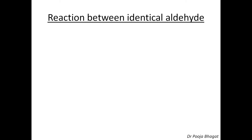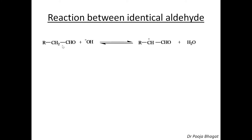Now let us discuss the reaction between identical aldehydes. In part 1, I have already discussed the reaction between acetaldehyde in detail. Here I am taking a general aldehyde molecule and discussing the mechanism. This is the general aldehyde RCH₂CHO. For R, you can substitute various values. When R is H, this is acetaldehyde or ethanol. When R is methyl, it is propanol. I am discussing the mechanism by taking RCH₂CHO, a general aldehyde.